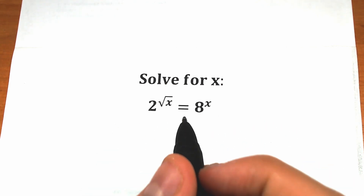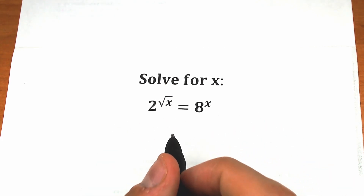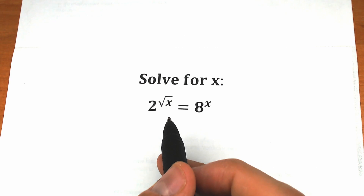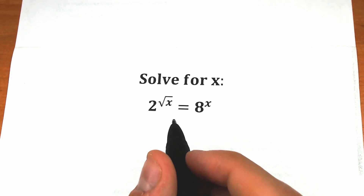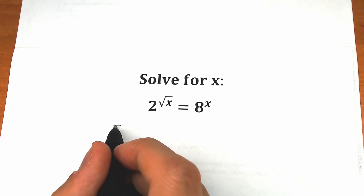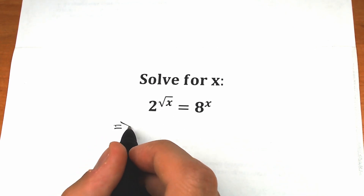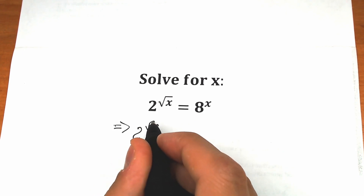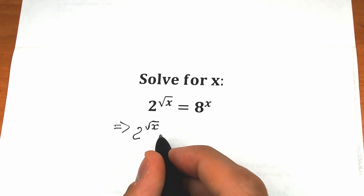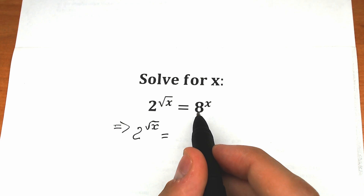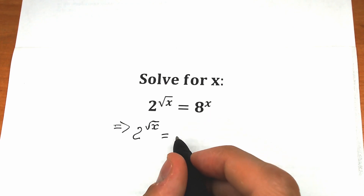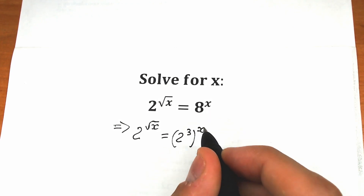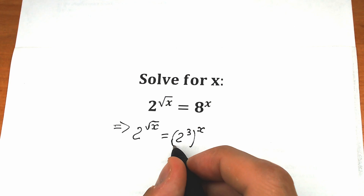In this video I'm going to fully explain how to do this correctly, step by step. First of all, this 8 can be written as 2 cubed, and it changes absolutely everything for us. So on the left side we have 2 to the power square root of x — absolutely the same thing — and on the right side we write this 8 as 2 cubed, raised to the power x.